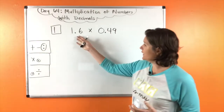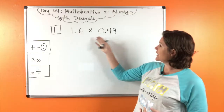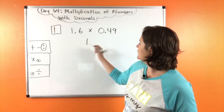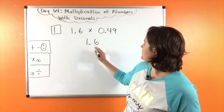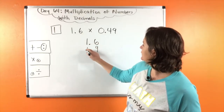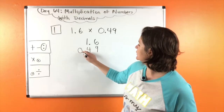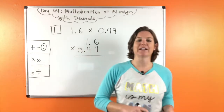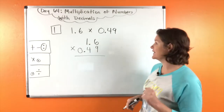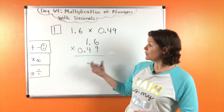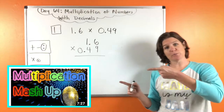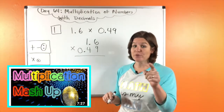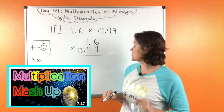So right now we have one and six tenths times forty-nine hundredths. I'm going to go ahead and write one and six tenths — nine, four — zero decimal. The decimal does not have to be lined up at all; we're going to shift it at the end. When we're multiplying, we will use a little bit of the multiplication mashup, which you can find for free on YouTube, to help you get faster at your multiplication facts.